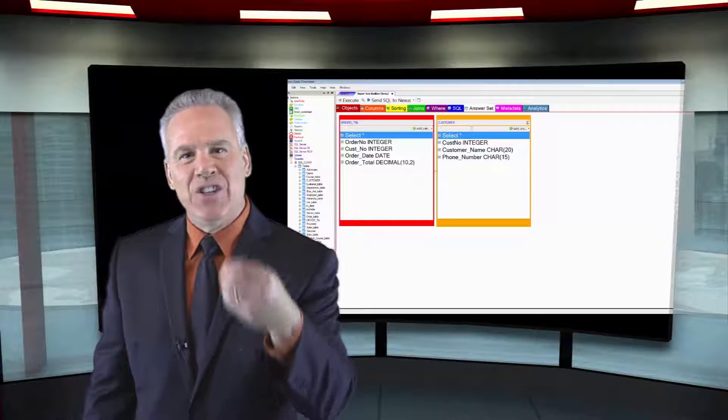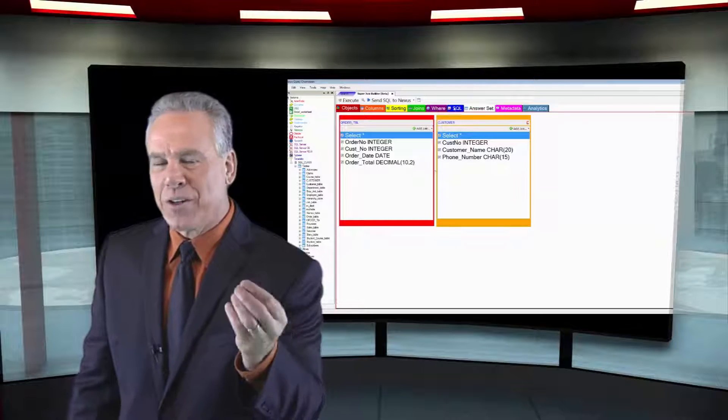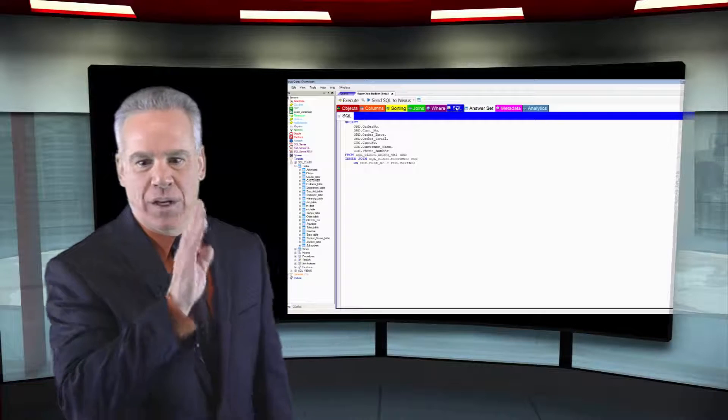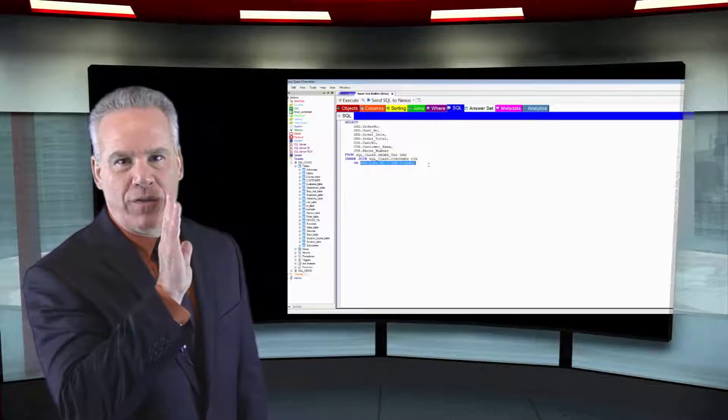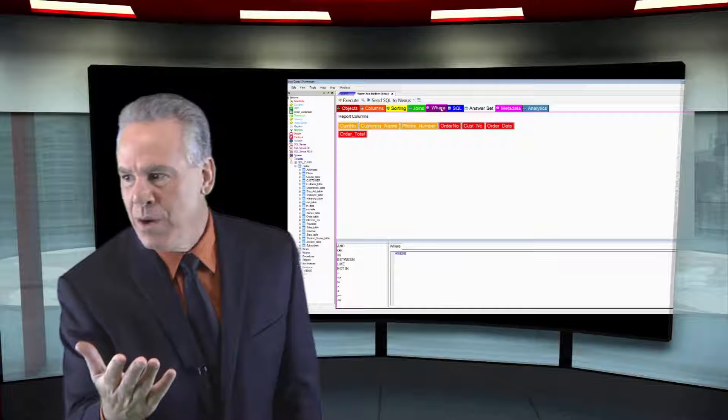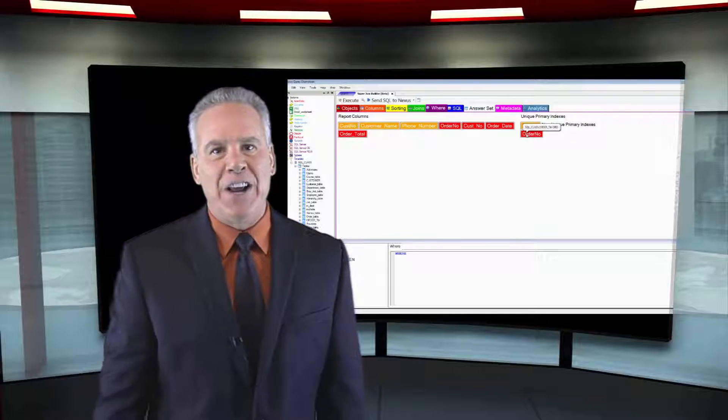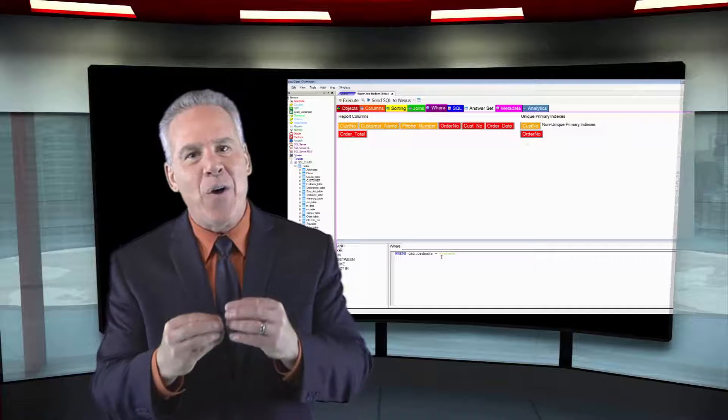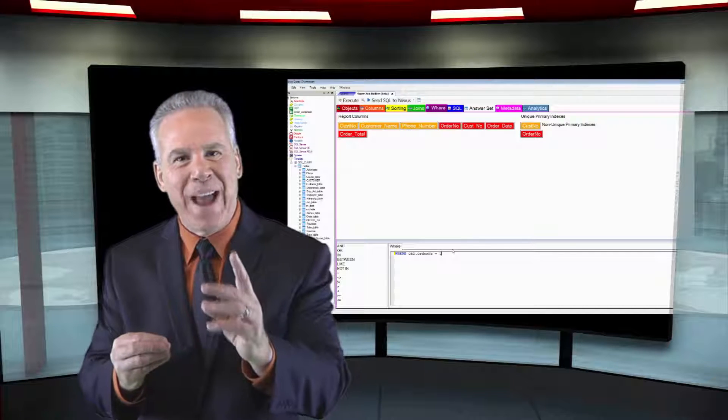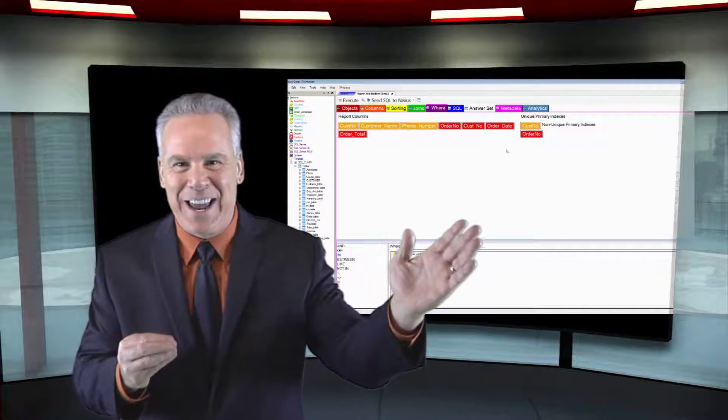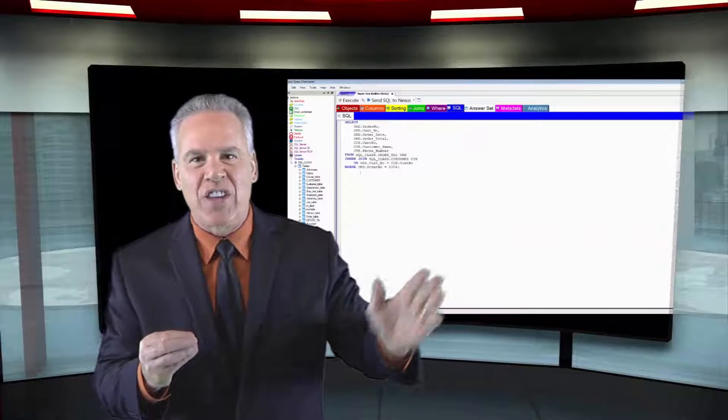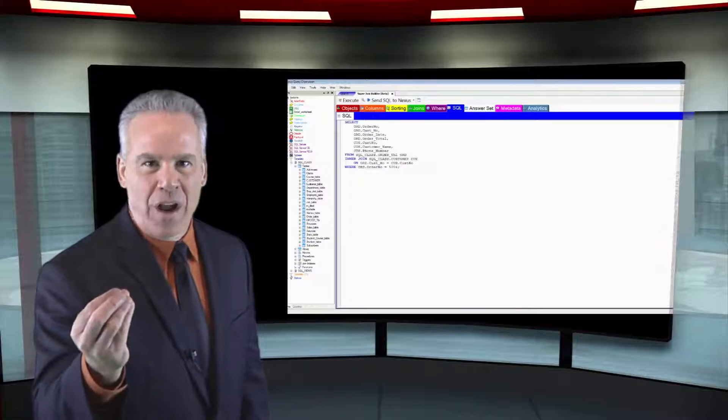They're going to use the additional and or where clause and go find the row 1004. It's the primary index of its table. Boom, boom, boom. They find it in under one second and then they only have to find one matching row in the customer table. This is going to save hours on your query.